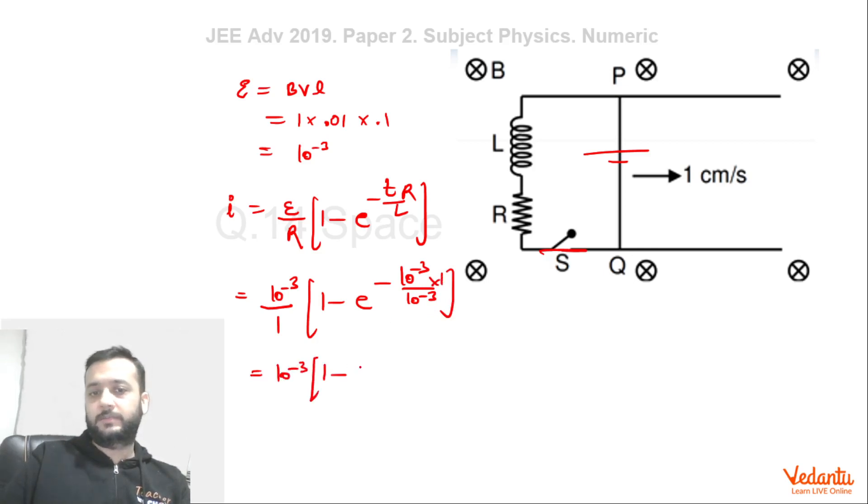So this value becomes e to the power minus 1 which was given to us as 0.37. So always remember this is a hallmark of a good paper that they will ask less calculations and more concepts.